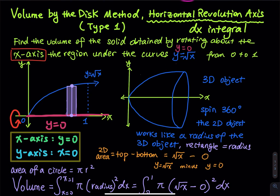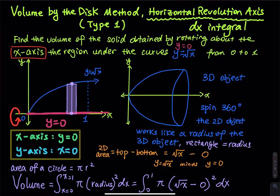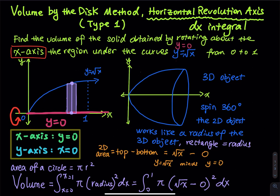Since this lesson is about volume, let's talk about some methods. The first method I'd like to discuss is the disc method. There are two types; in this video we will do Type 1, which is horizontal revolution axis using a dx integral.